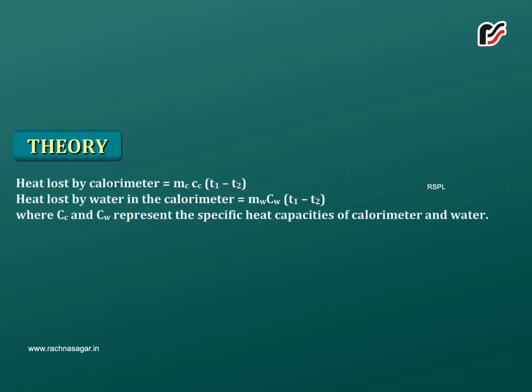Heat lost by water in the calorimeter is equal to Mw × Cw × (T1 - T2), where Cc and Cw represent the specific heat capacities of calorimeter and water.